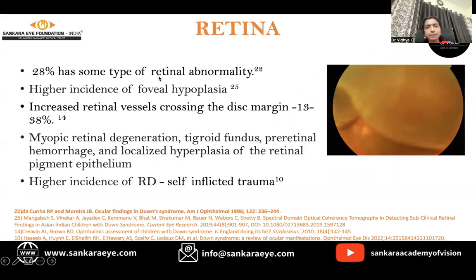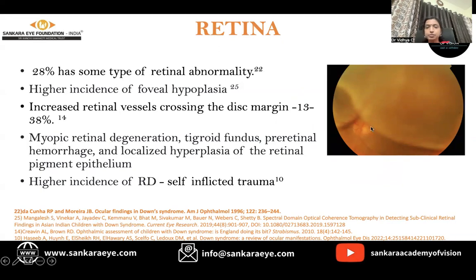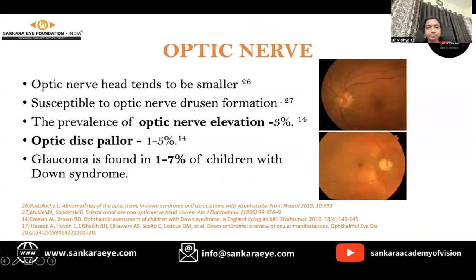About 28% have some type of retinal abnormality. Higher incidence of foveal hypoplasia has been demonstrated. Increased retinal vessels crossing at the disc margin has been found in 13% to 38%. Myopic retinal degeneration, tigroid fundus, pre-retinal hemorrhages, and localized hyperplasia of the retinal pigment epithelium have also been found. There is a higher incidence of rhegmatogenous retinal detachment, which may be due to self-inflicted trauma. The optic nerve head tends to be smaller, and these children are more prone to optic nerve head drusen.